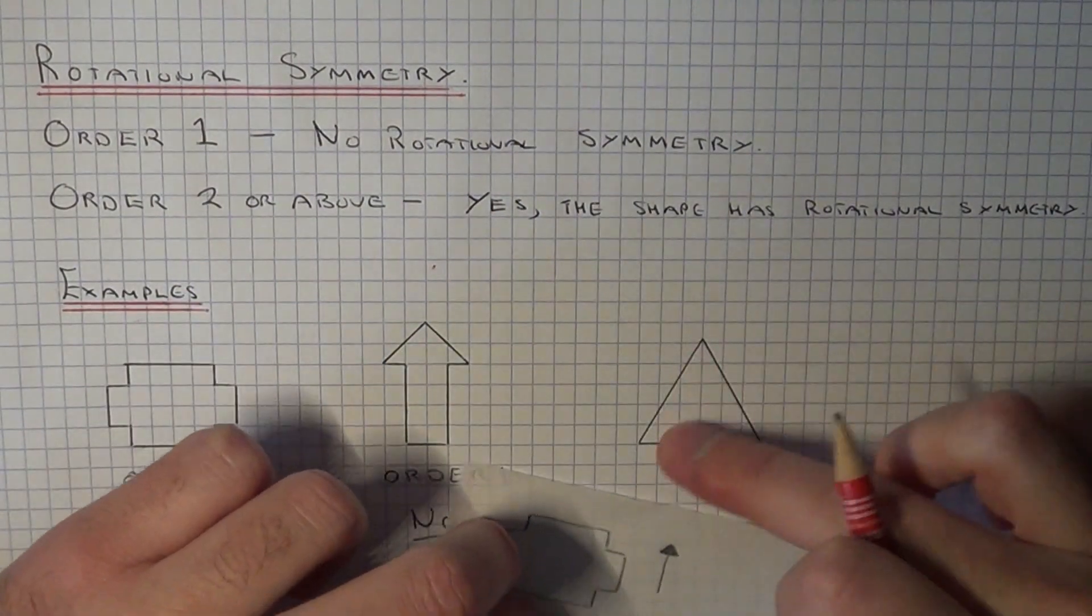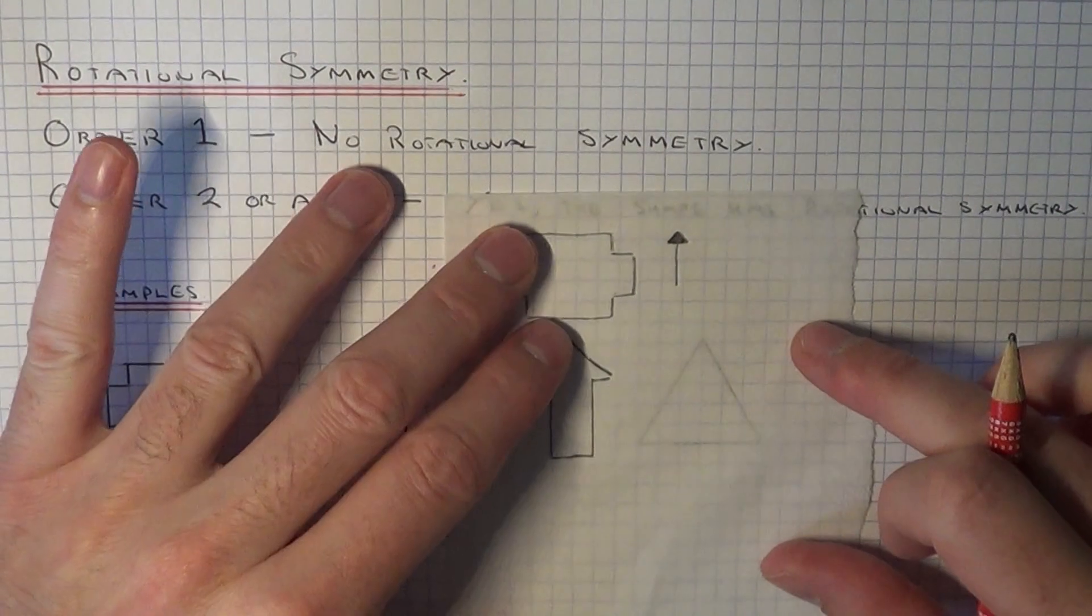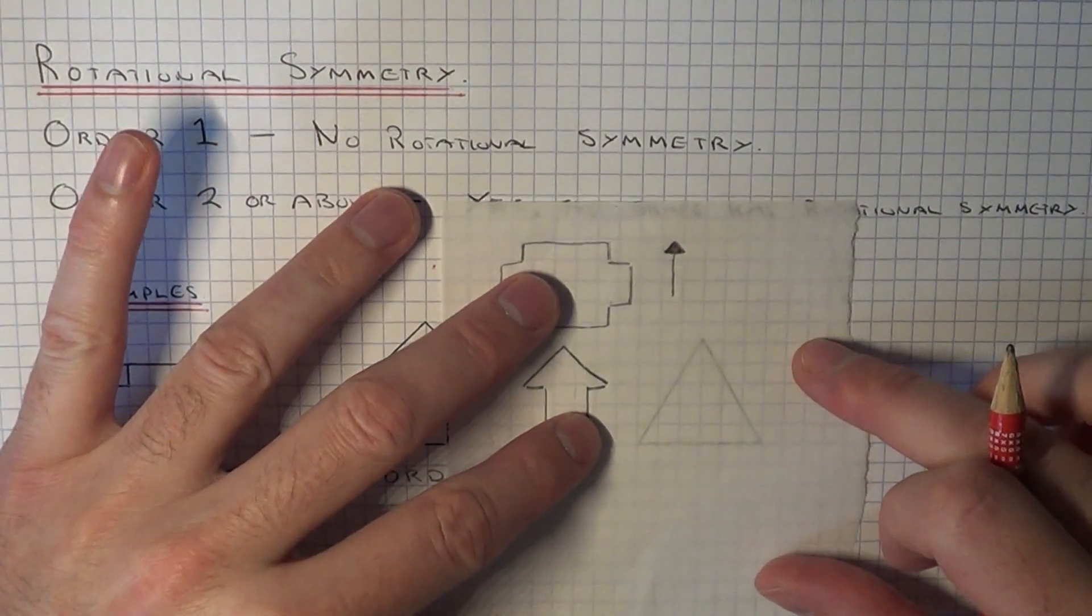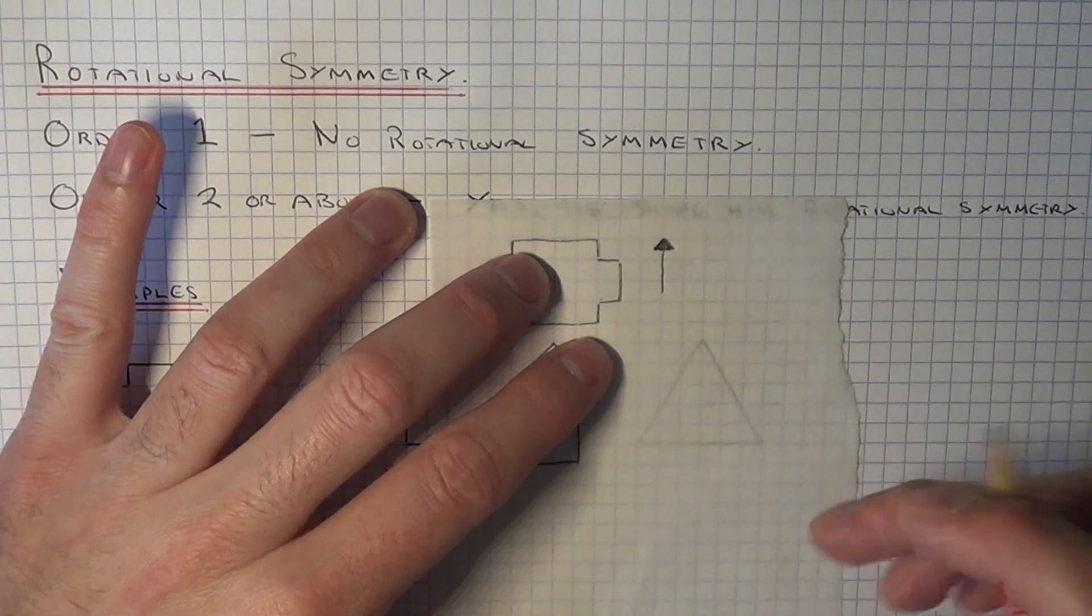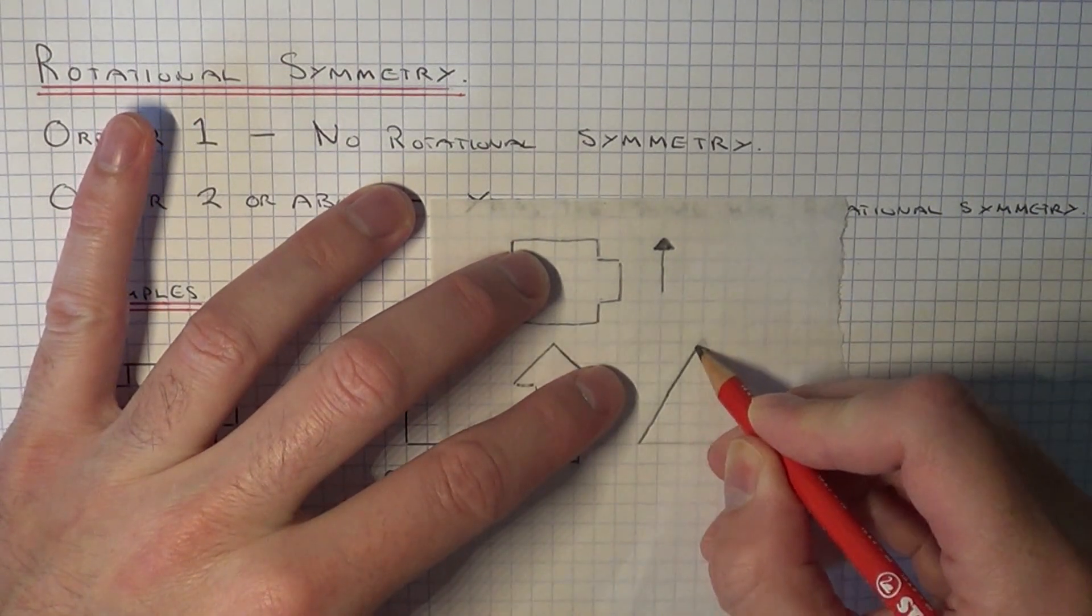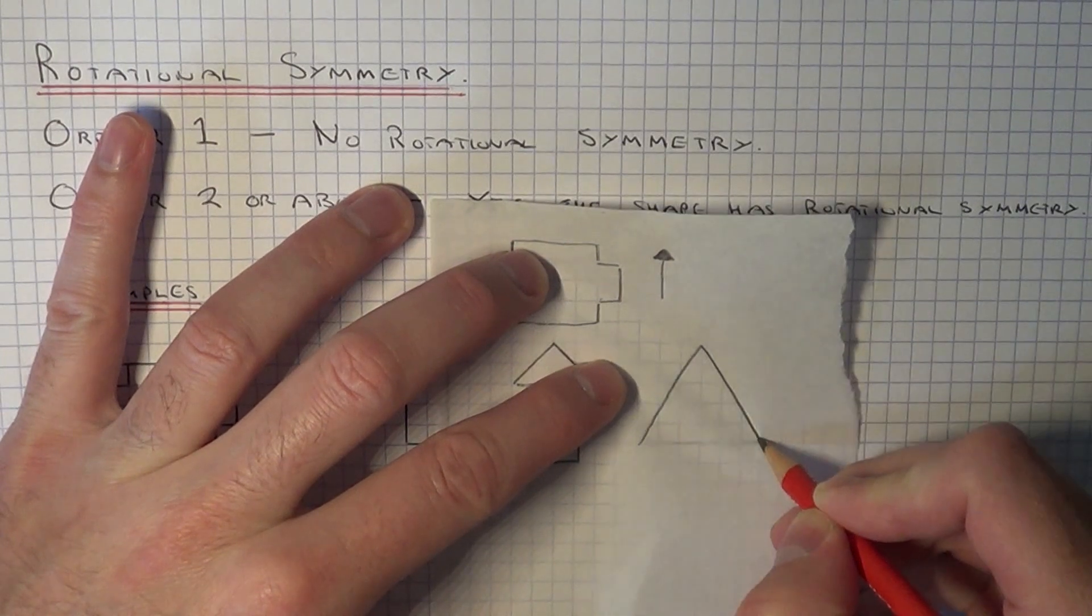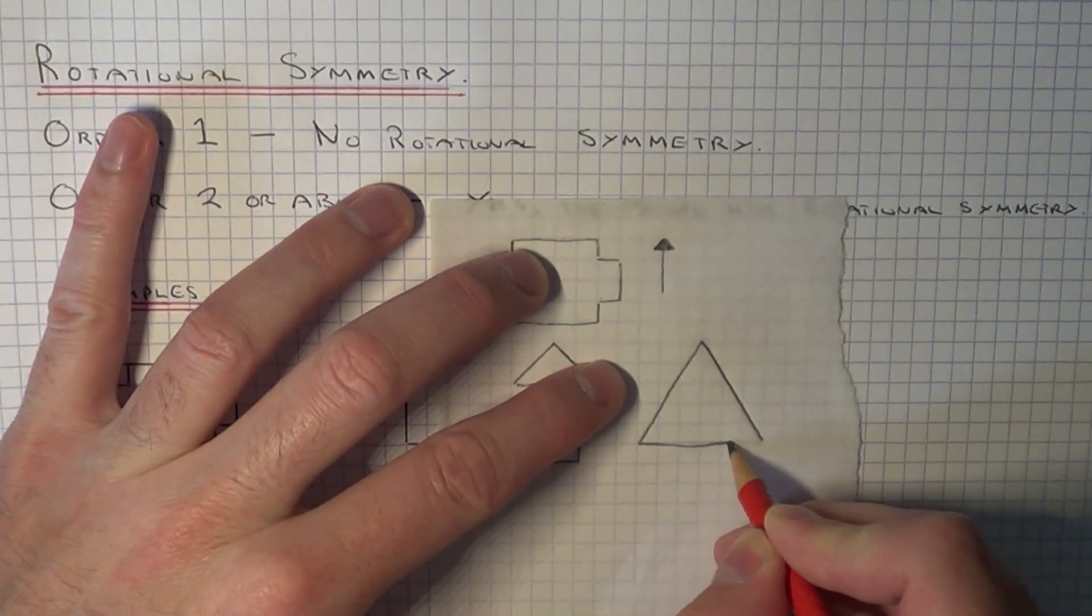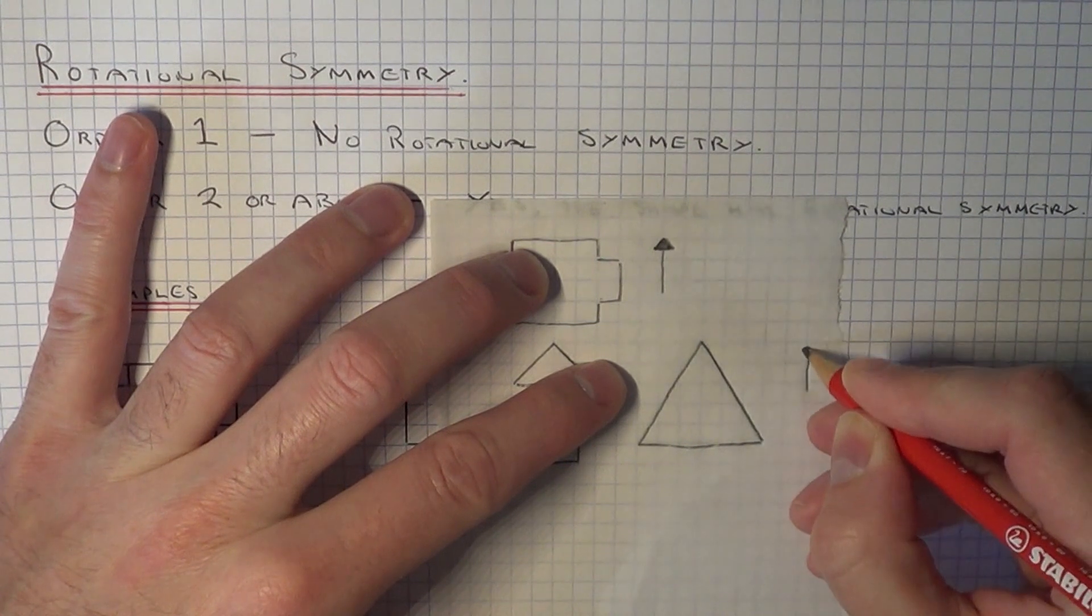So last shape we've got an equilateral triangle. So an equilateral triangle has three equal sides and three equal angles, if you remember. So let's trace the shape. Okay, let's put a little arrow on the side.